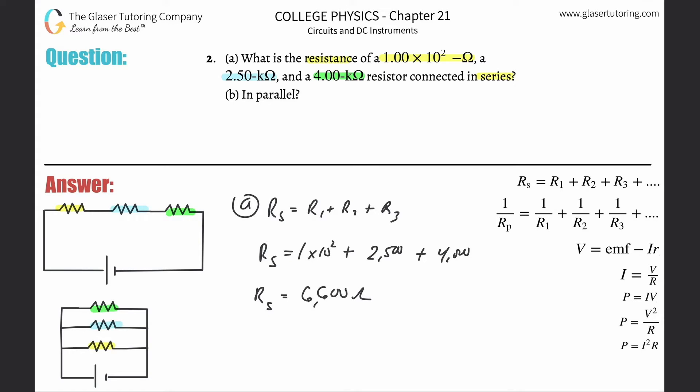You've got to make sure you have consistent units for letter B. It's asking what about parallel? So it's going to be 1 over the resistance in parallel equals 1 over the first resistance which is 100, plus 1 over the second which is 2500, plus 1 over the third which is 4000. Now just take this and plug it into the calculator: 1/100 + 1/2500 + 1/4000.